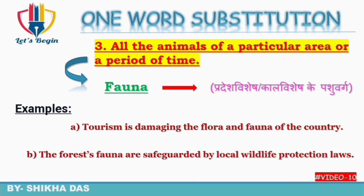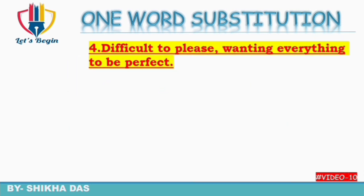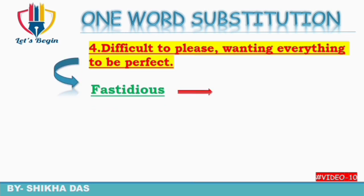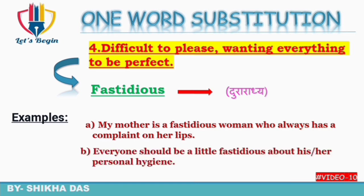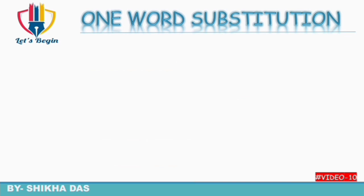Fourth question: difficult to please, wanting everything to be perfect — aisa insaan jisko please karna bahut hi difficult ho, jo sab kuch ek dum perfect dekhna chahta ho. Isko one word mein kaha jata hai 'fastidious'. Fastidious ko Hindi mein kehte hain 'dhuraradhyya' — jisko prasann karna kathin ho. Examples: 'My mother is a fastidious woman who always has a complaint on her lips.' 'Everyone should be a little fastidious about personal hygiene.'